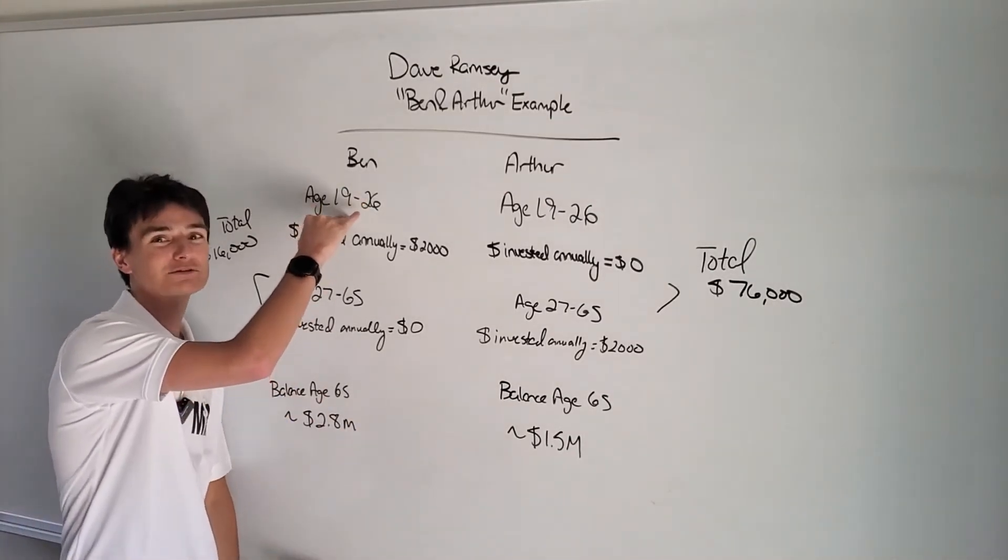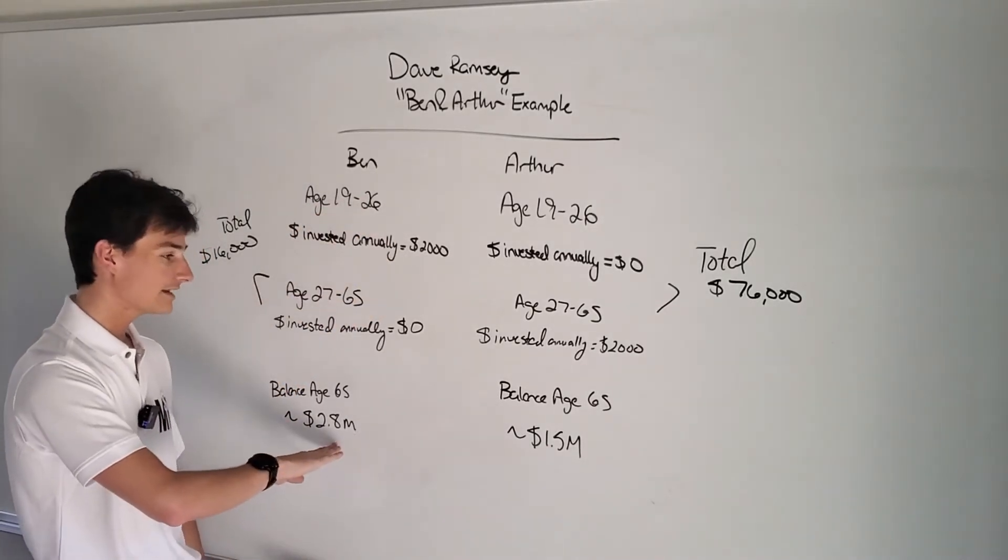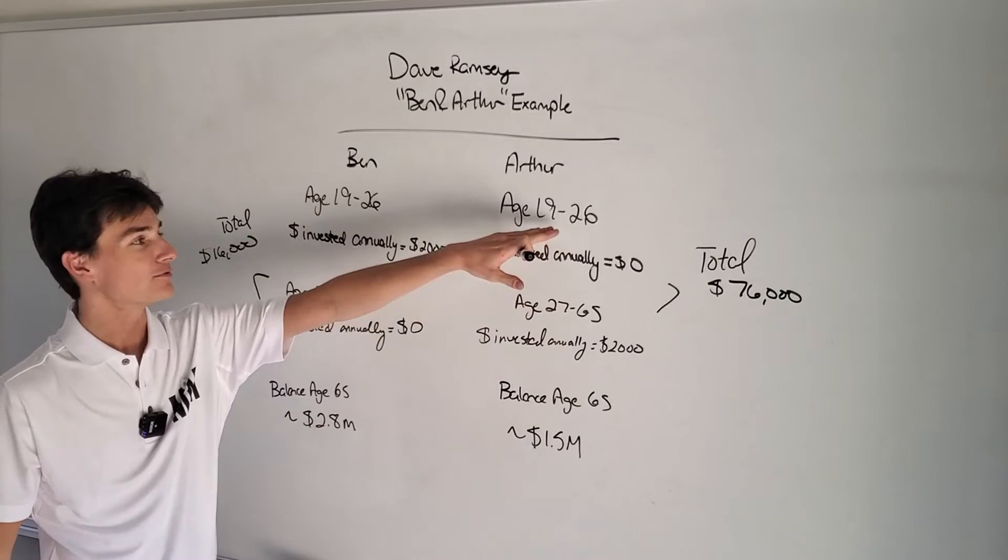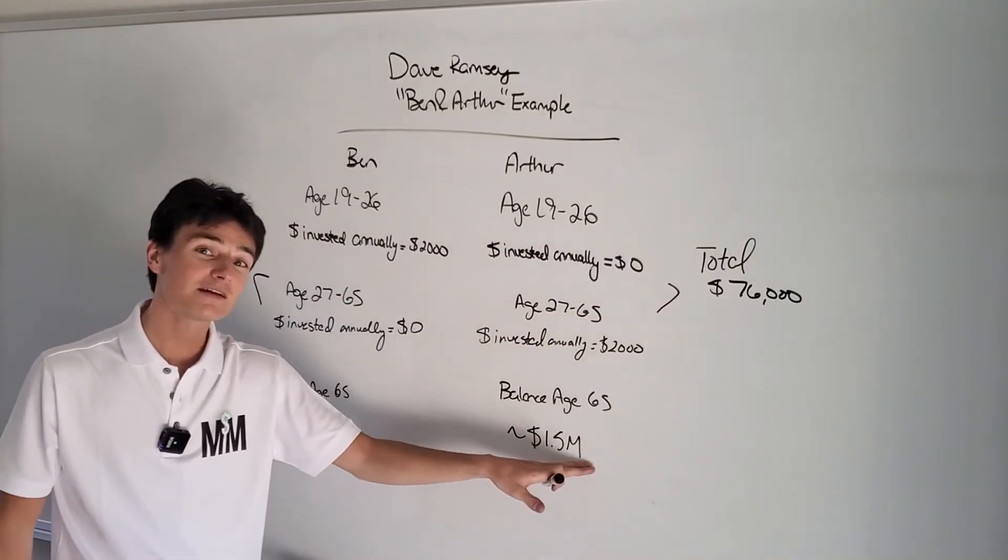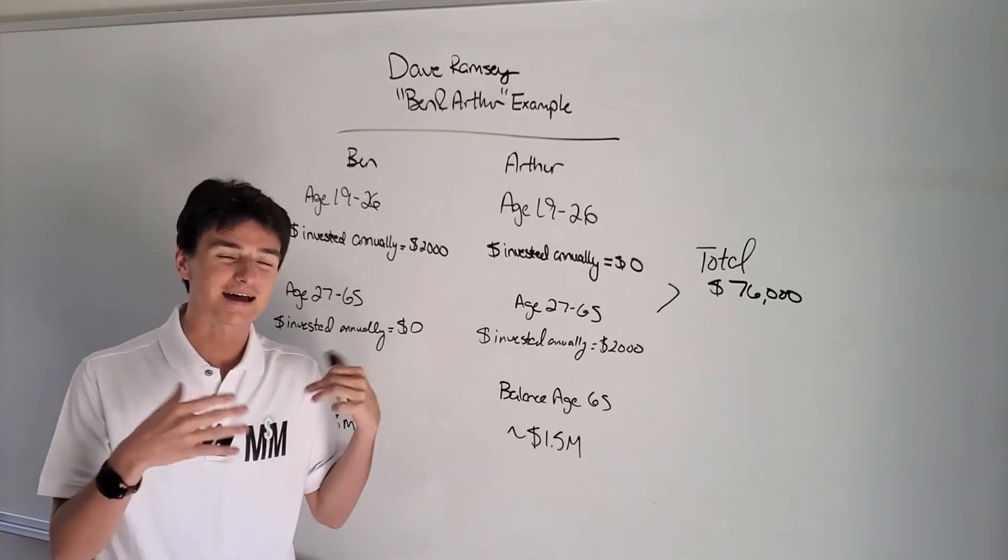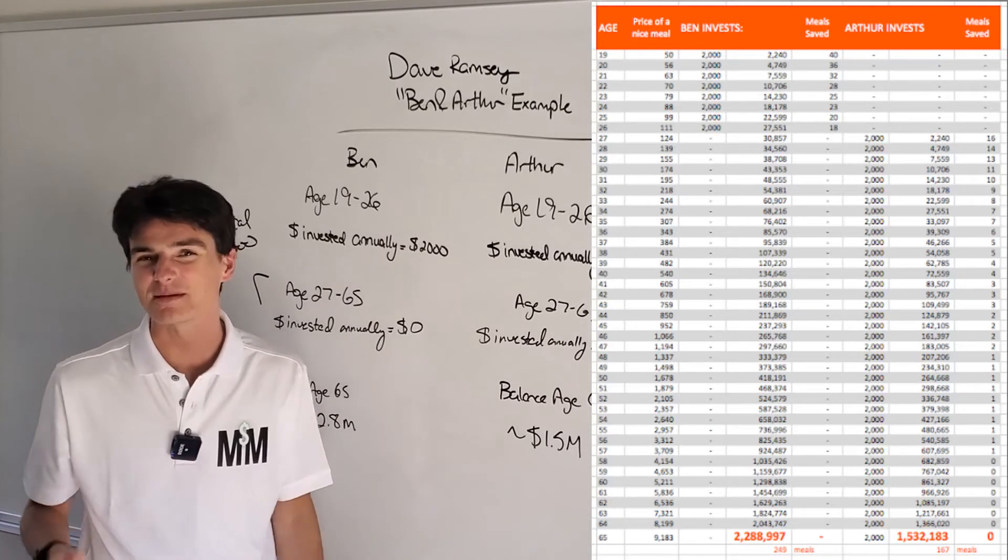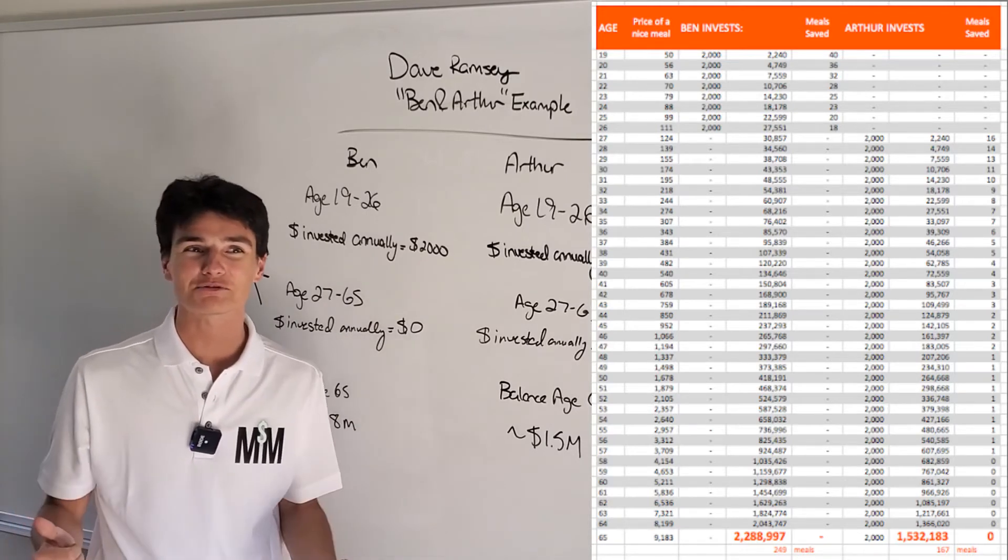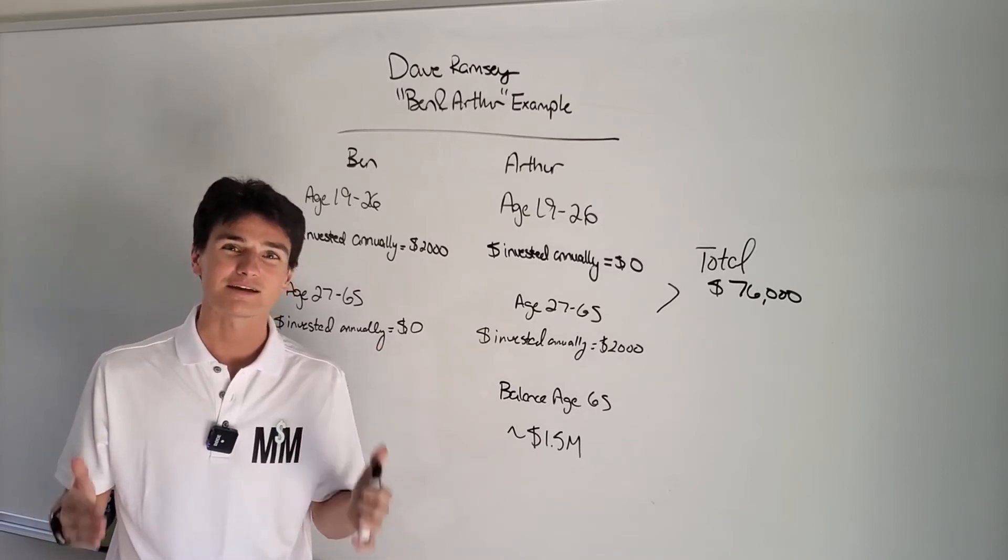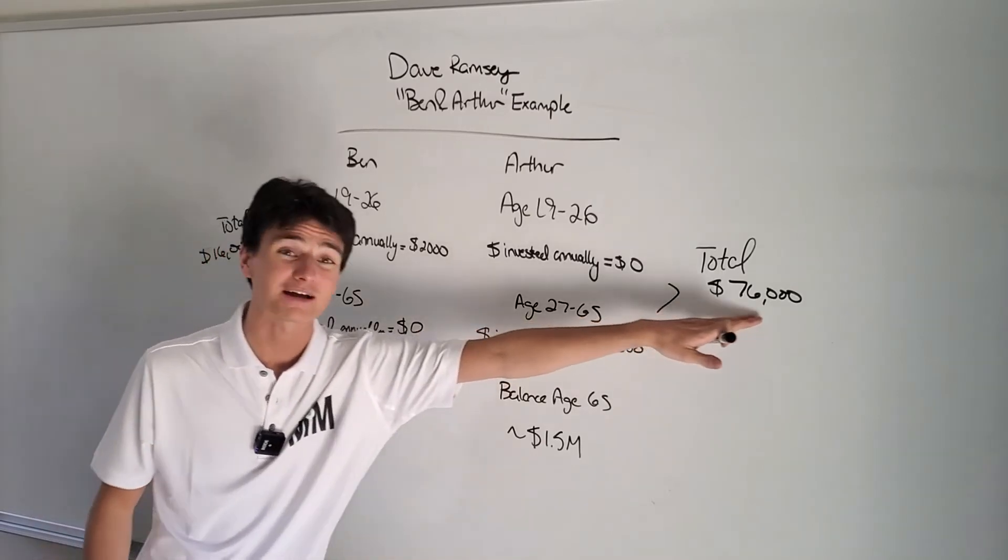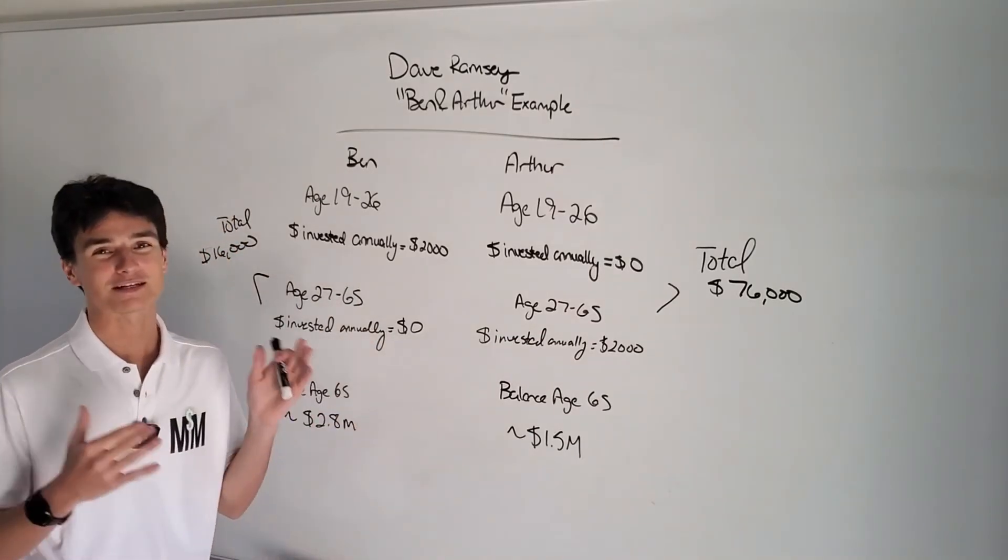Think about this. You can be 19 years old, put two grand away for only that many years, and you could end up having more money than somebody who starts late, puts in four times the amount of money, and by the end of it, they have a lower portfolio balance than you do. This diagram that he showed, which I'll actually put up in this video, it's absolutely mind boggling to me.